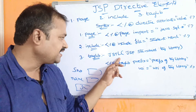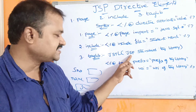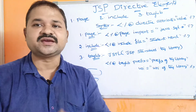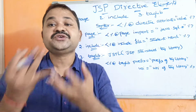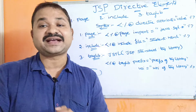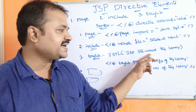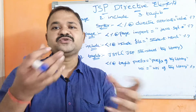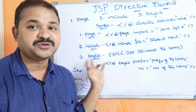The next directive is taglib. Taglib refers to JSTL, which stands for JSP Standard Tag Library. A tag library is a collection of user-defined tags. So if you want to import those user-defined tags into your program, then we use the taglib directive.